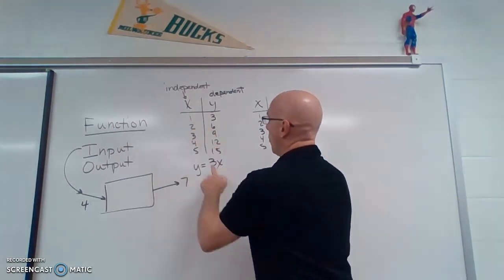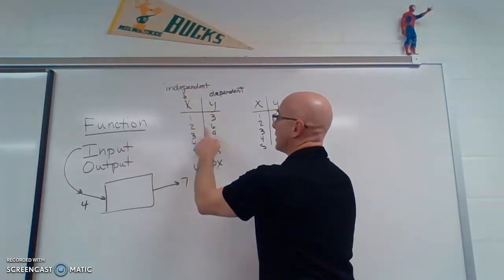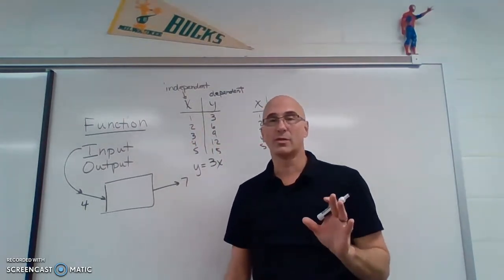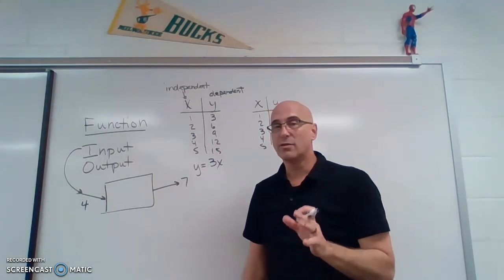So 3 times 1 is 3. 3 times 2 is 6. 3 times 3 is 9. You can see how that will work. Let's look at another chart.